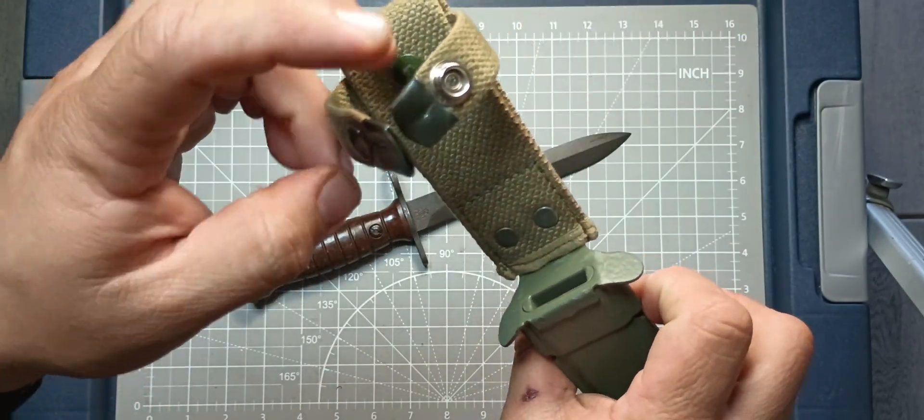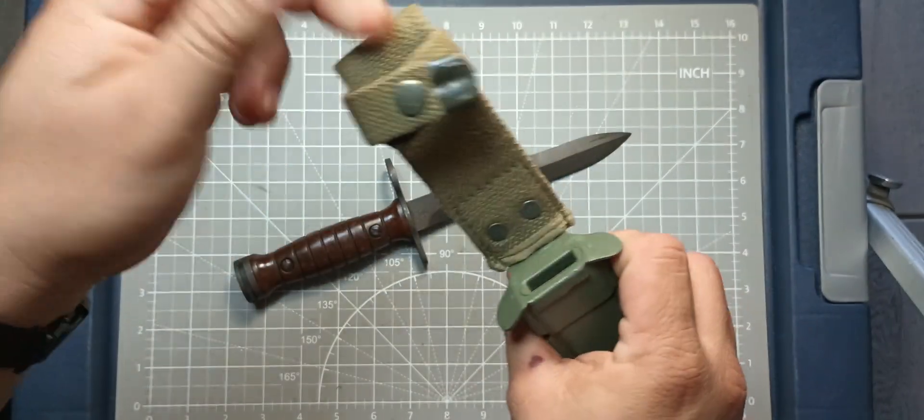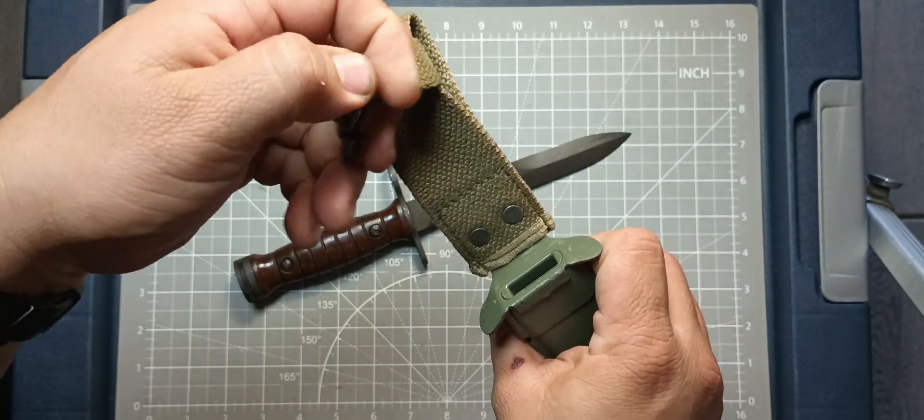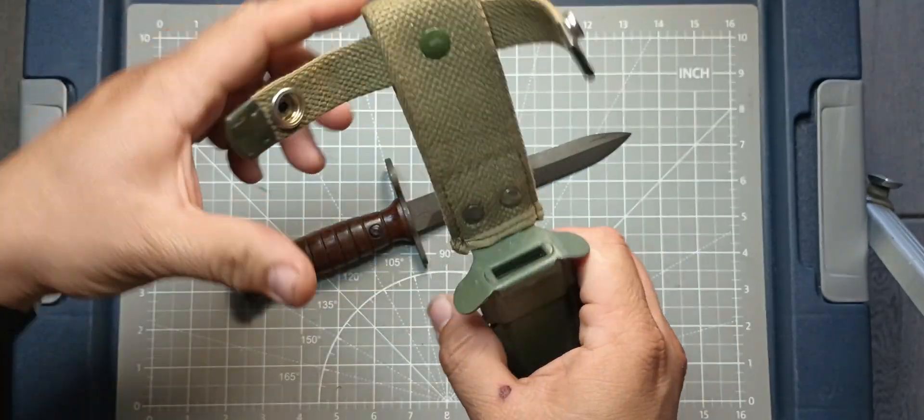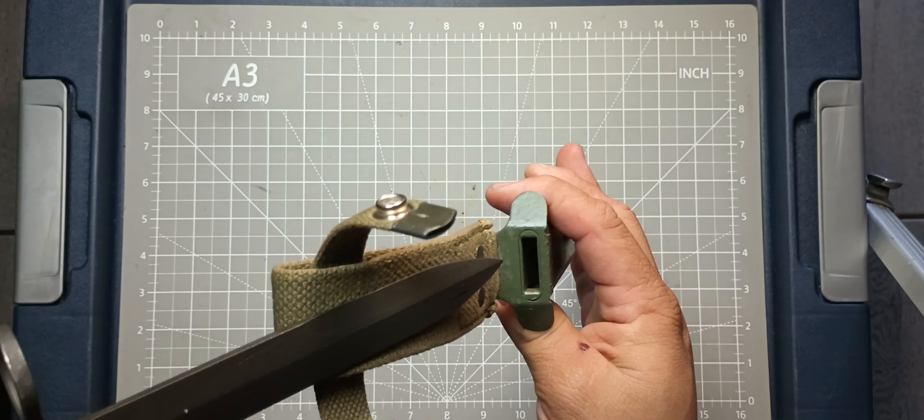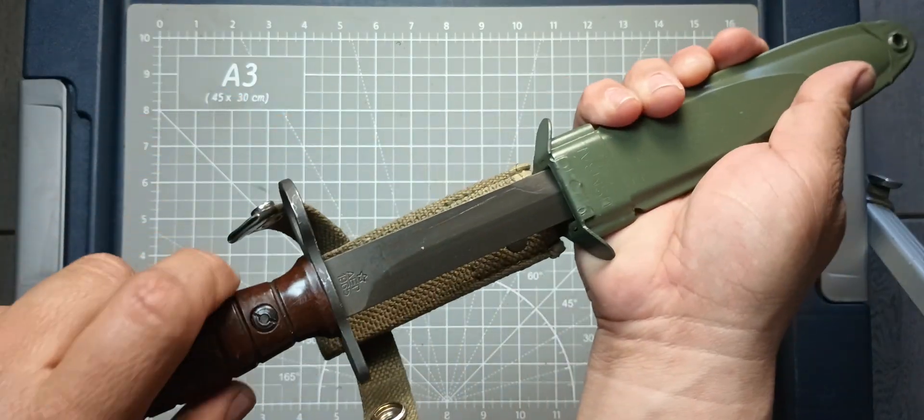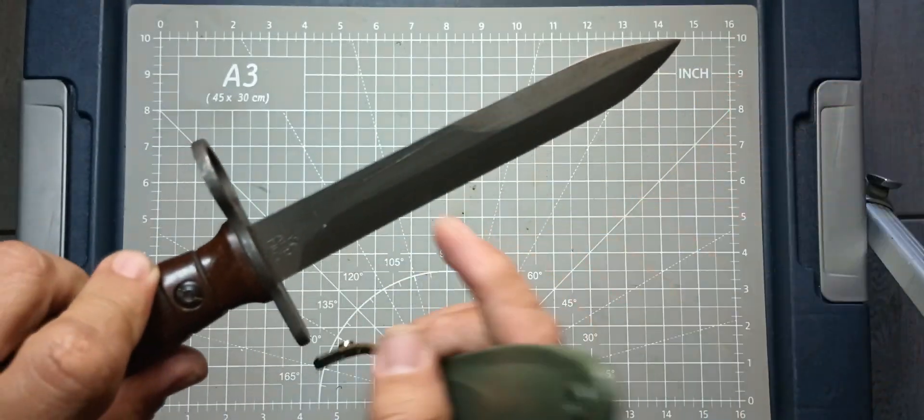Nice belt loop and your button snap right here. It's green. It has these little metal tabs so you can hold on to it. The bayonet slides in and out. It has like a retainer in there, like a little spring retainer.